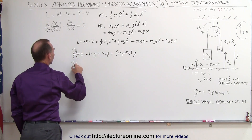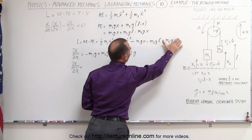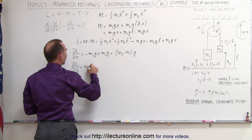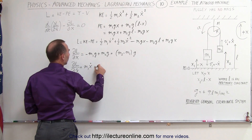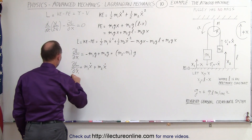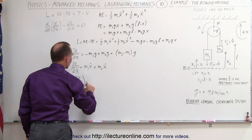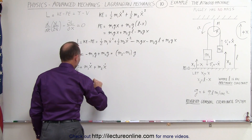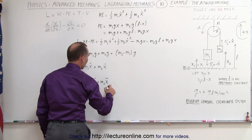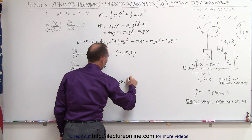The partial of L with respect to x-dot: those three terms go to zero, and the remaining terms give us m1 x-dot plus m2 x-dot. Taking the time derivative of that, the derivative with respect to time of the partial of L with respect to x-dot is equal to m1 x-double-dot plus m2 x-double-dot, which factors to (m1 plus m2) times x-double-dot.